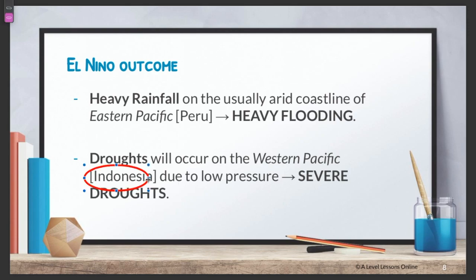The opposite occurs for the western Pacific — countries such as Indonesia experience droughts, because the temperature has risen so high. As a result, crops and vegetables cannot grow properly during El Niño.